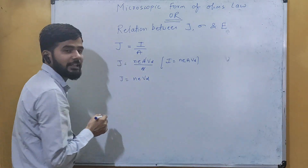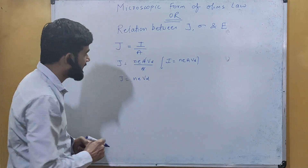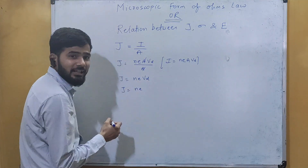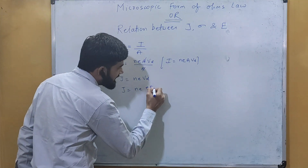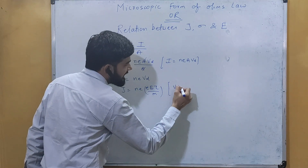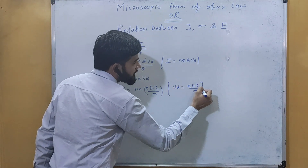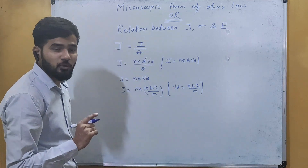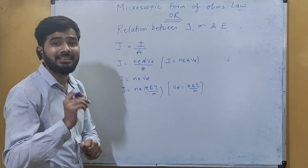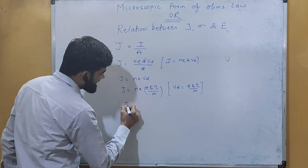Now we replace the drift velocity v_d with its expression. We know v_d equals e·E·τ divided by m, where small e is the charge of the electron, capital E is the electric field intensity, τ is the relaxation time, and m is the mass of the electron.